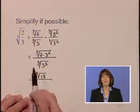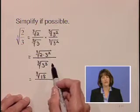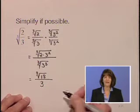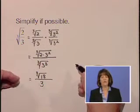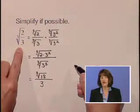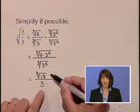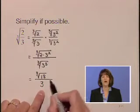In the denominator, the cubed root of three to the third is three. So the simplified form, found by rationalizing the denominator, is the cubed root of 18 all over three.